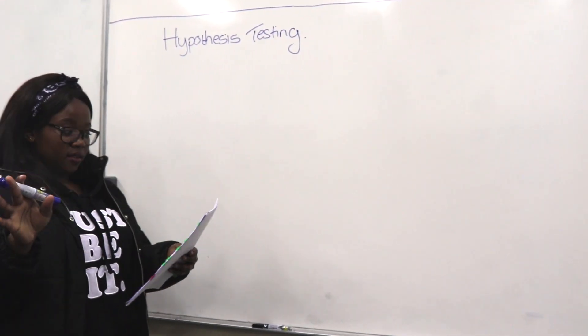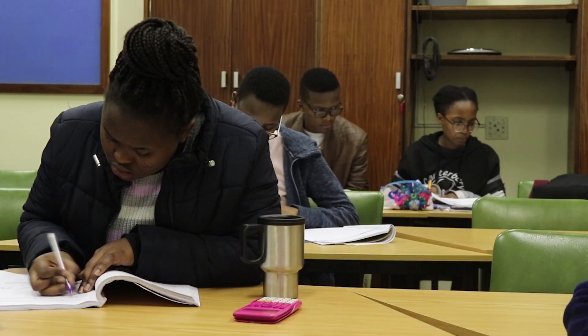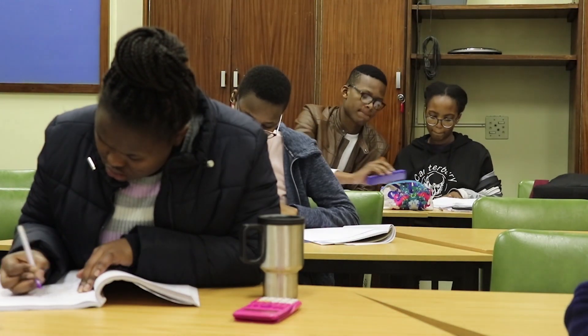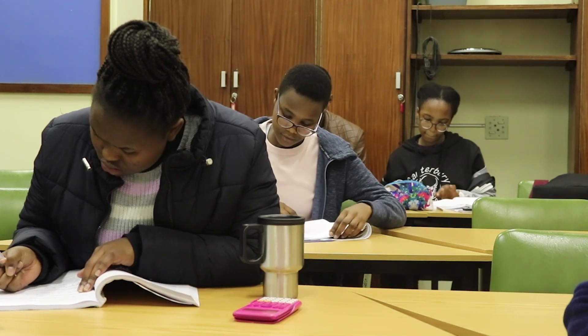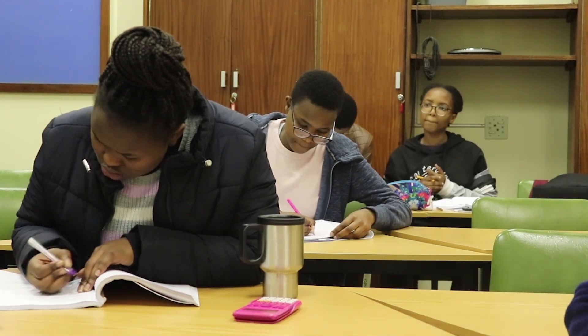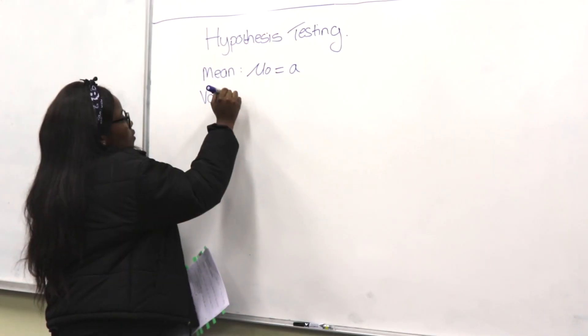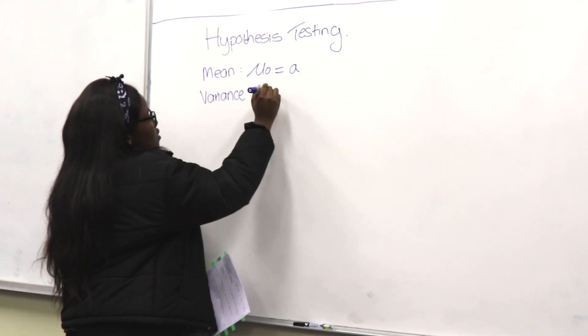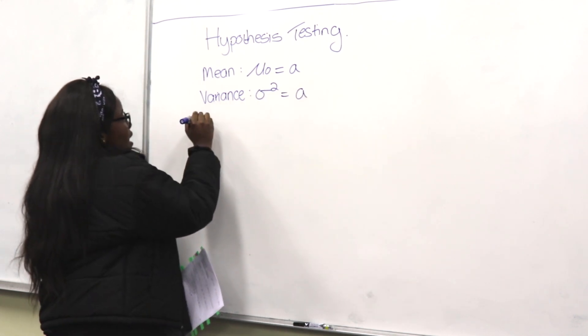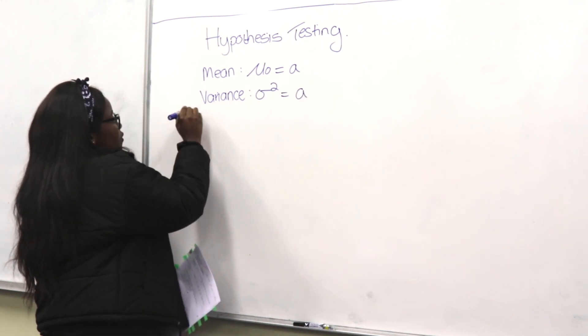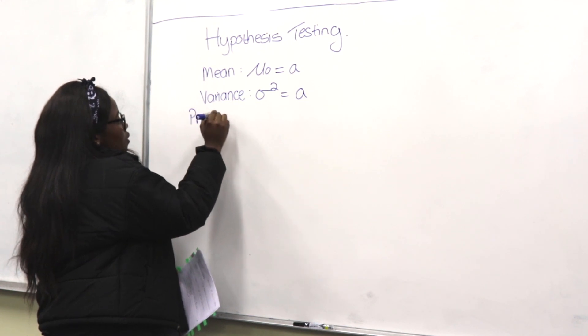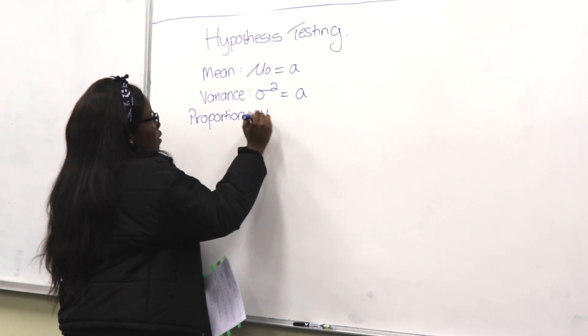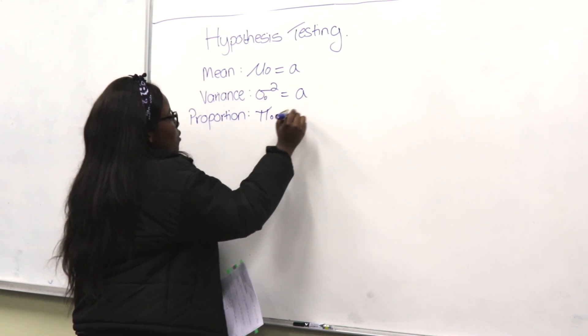There are three cases for the one sample. There's a case where we're testing for the mean, where mu will be equal to A. There's a test when we're testing for the variance, where sigma squared will be equal to a certain number. And there's one where we are testing for proportion, where pi will be equal to a certain number.